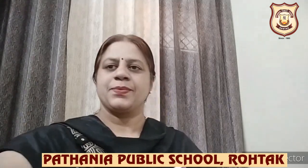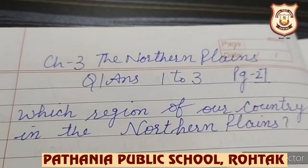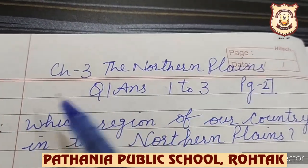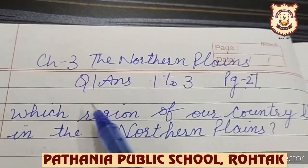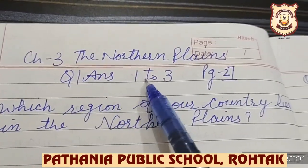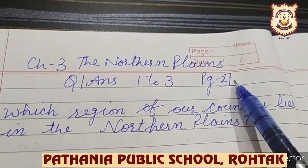Okay children, so let's start doing question answers from page number 27. Let us start doing question answers of chapter number 3, the Northern Plains — question answers 1, 2, 3 from page number 27.